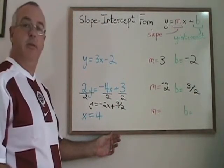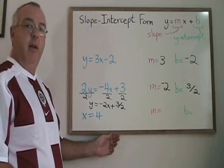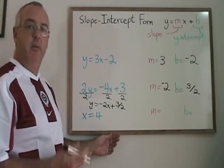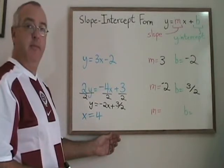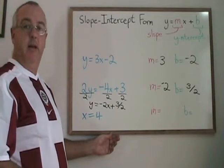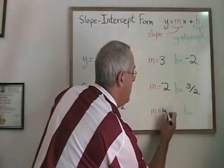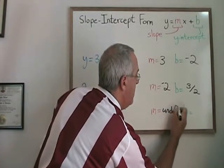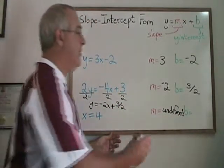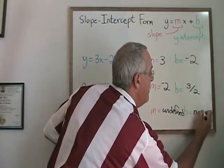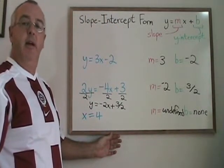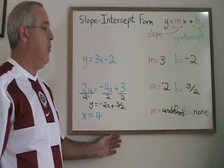In the third example, x equals 4, we have a vertical line, and we can't express this equation in y equals mx plus b form because we don't have a y to isolate. But using theory, we realize that vertical lines always have undefined slope, and the y-intercept is going to be none. Because a vertical line is parallel to the y-axis, it will not cross the y-axis, so there will be no y-intercept.